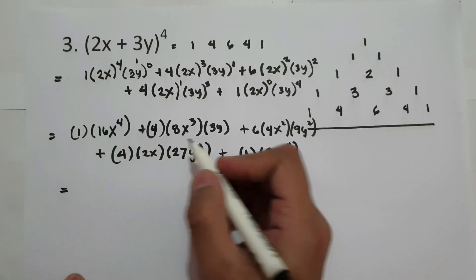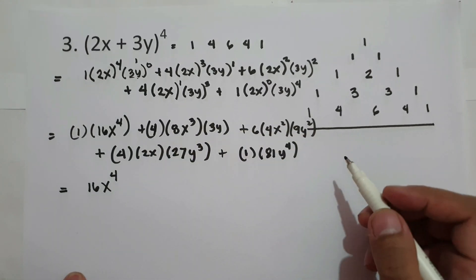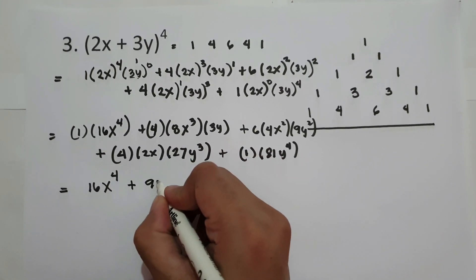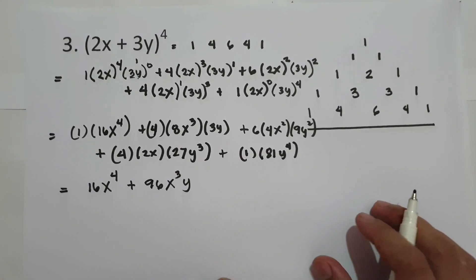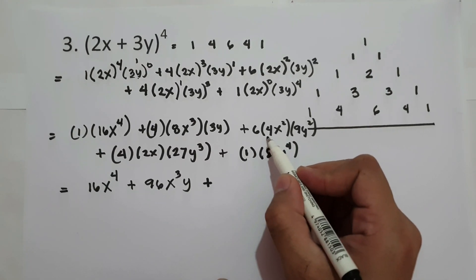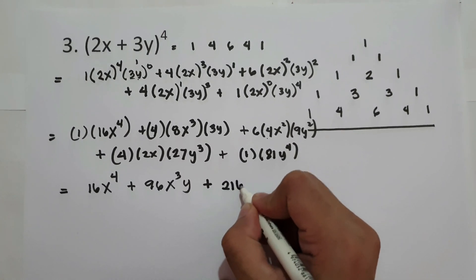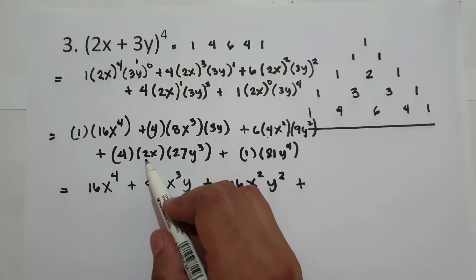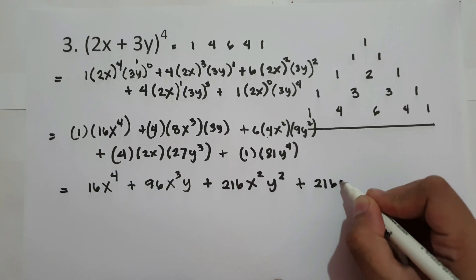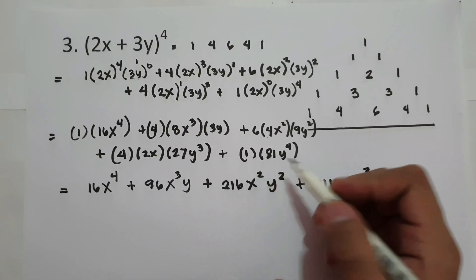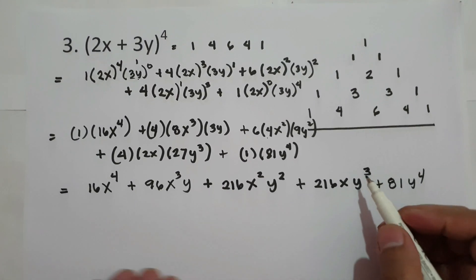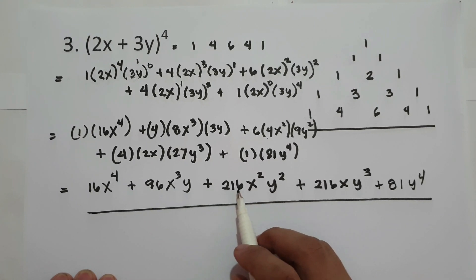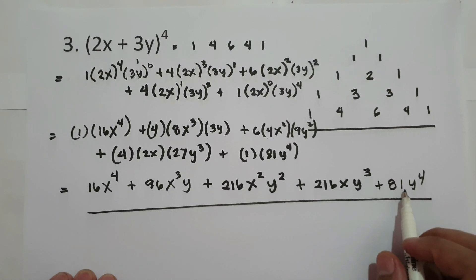Our final answer is: 1 times 16 is 16x to the 4th, plus 4 times 8 is 32 times 3 is 96x cubed y, plus 6 times 4 is 24 times 9 is 216x squared y squared, plus 4 times 2 is 8 times 27 is 216x y cubed, plus 1 times 81 is 81y to the 4th. So the final answer is 16x⁴ plus 96x³y plus 216x²y² plus 216xy³ plus 81y⁴.